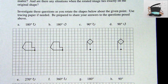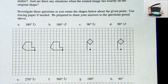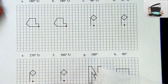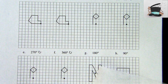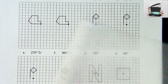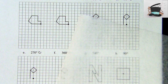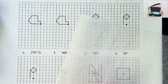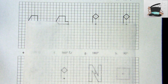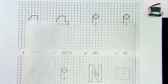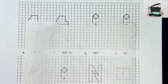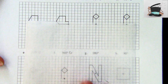Hey everyone, it's the Math Magician, and in this video we're going to talk about rotations. We're going to see how we can rotate these different shapes on this page using some tracing paper. If you don't have tracing paper, you could use another piece of paper that you can kind of see through.